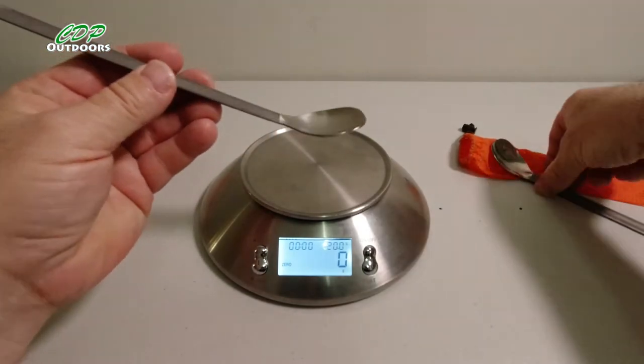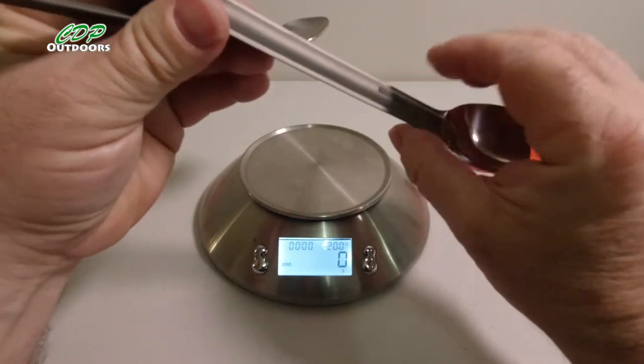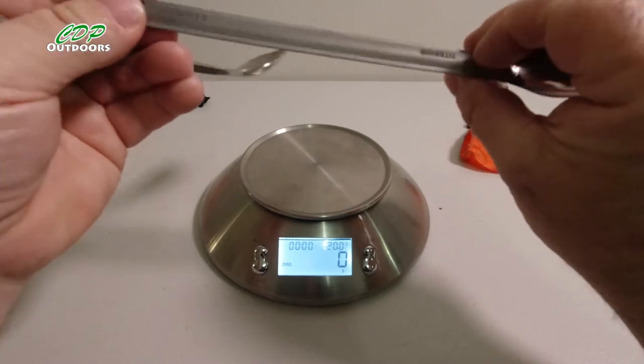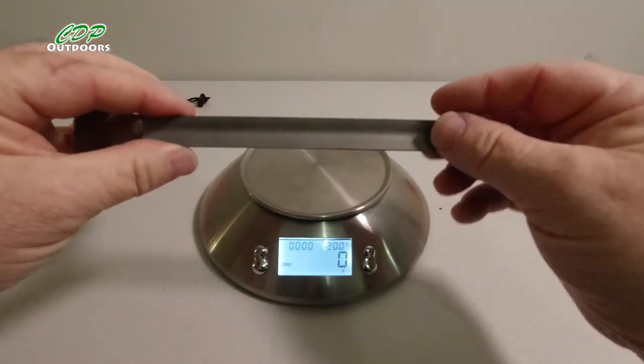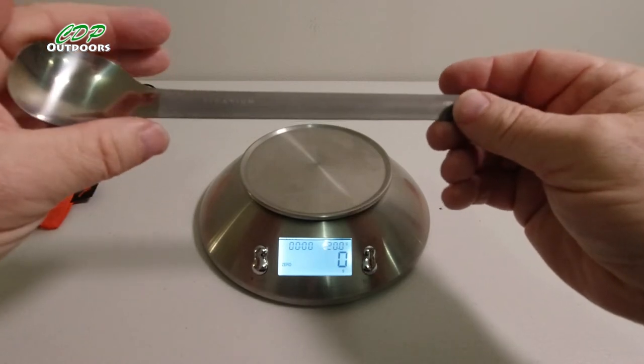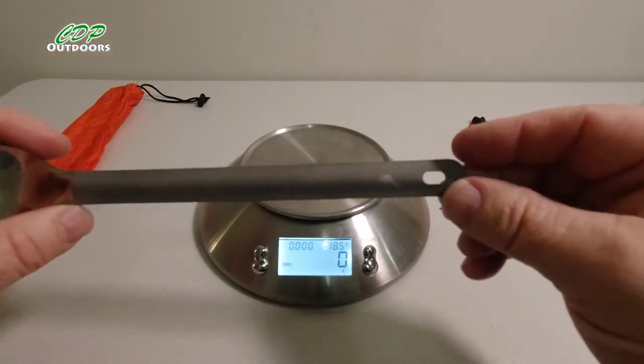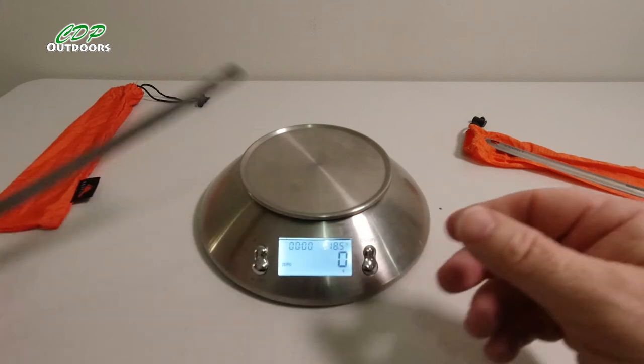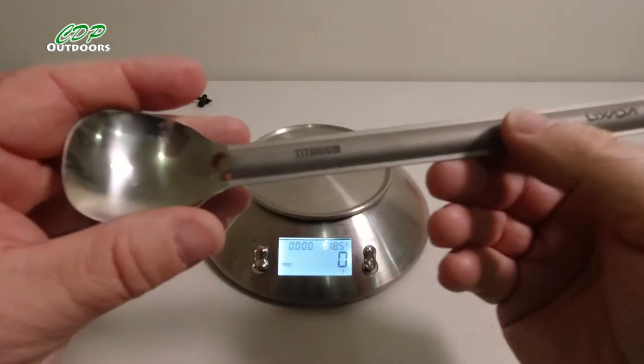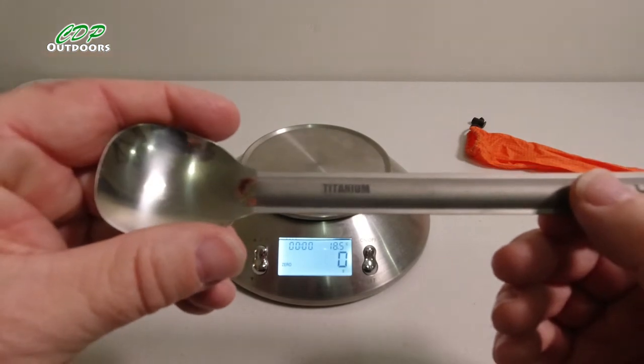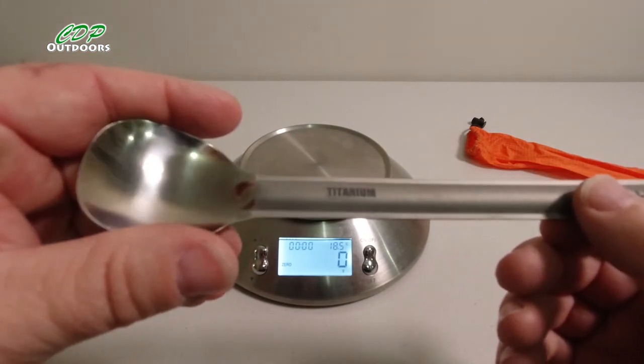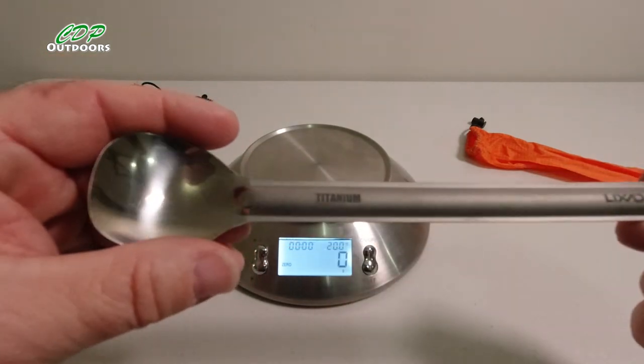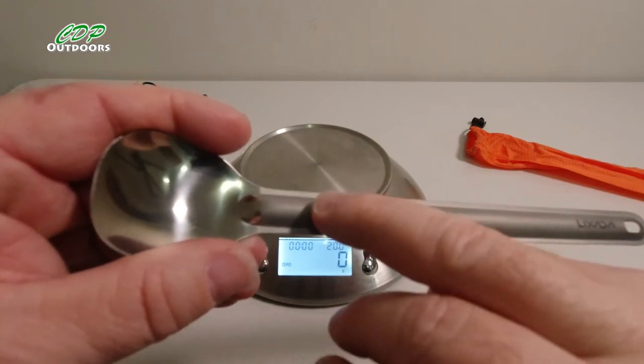Just picking it up, very similar I'll give you that, but the print, or should I say the indentation of the Lixada one is much deeper, whereas the Tokes is a lot shallower and not so harsh. The Tokes is nice and clean with nice clean print there.